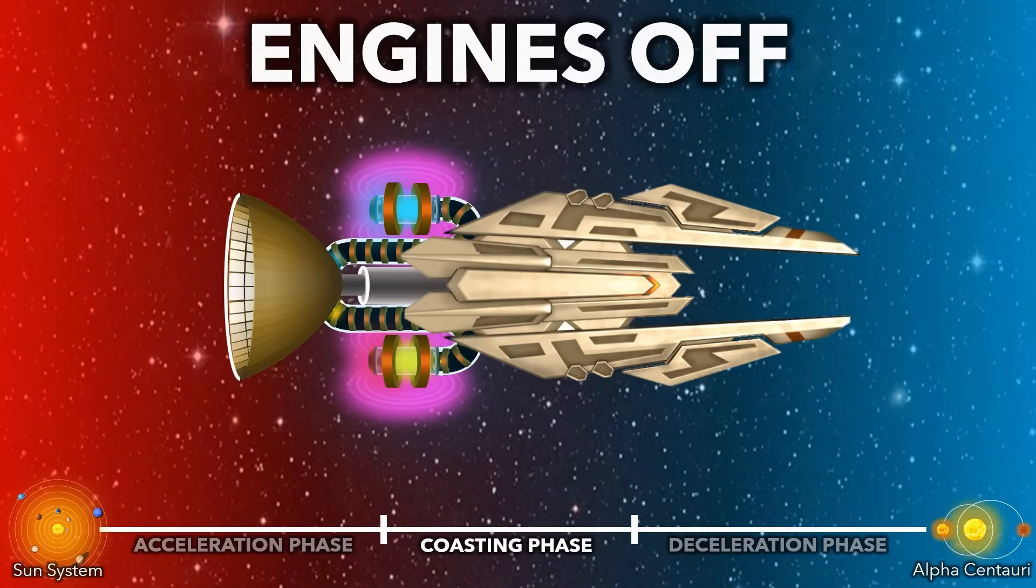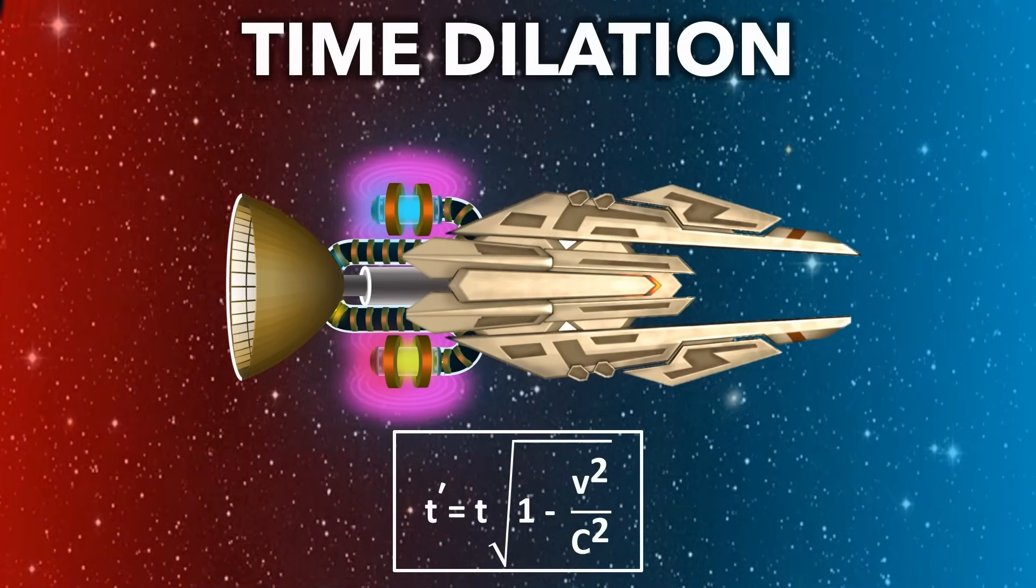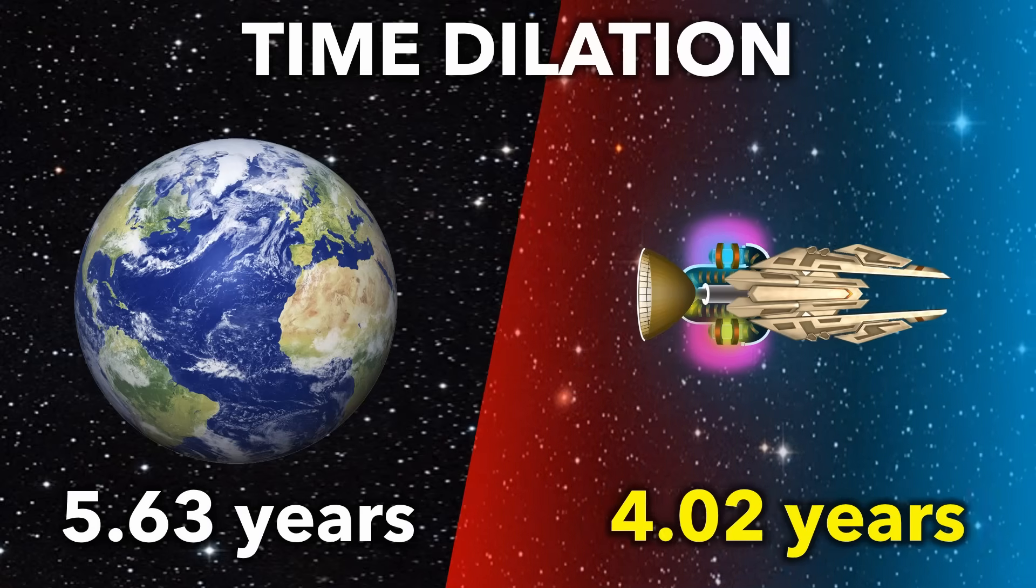The engines are now switched off, and we coast along at 70% light speed. This phase lasts about 5 and a half years for those on Earth, but due to time dilation, only 4 years passes for those on the ship.